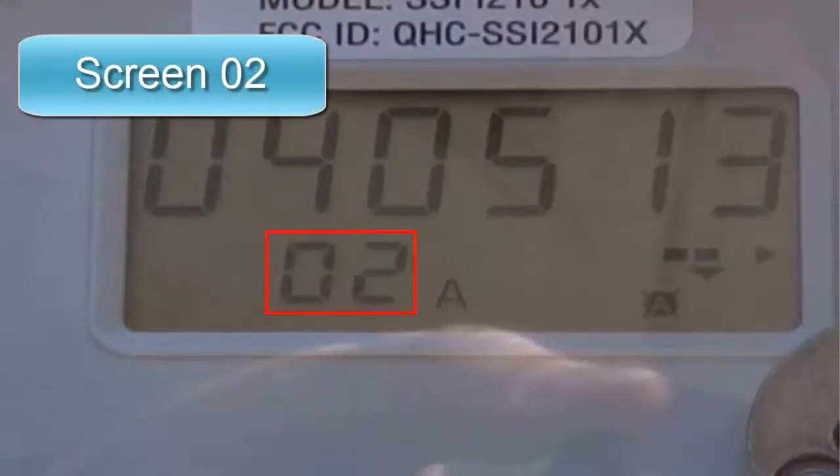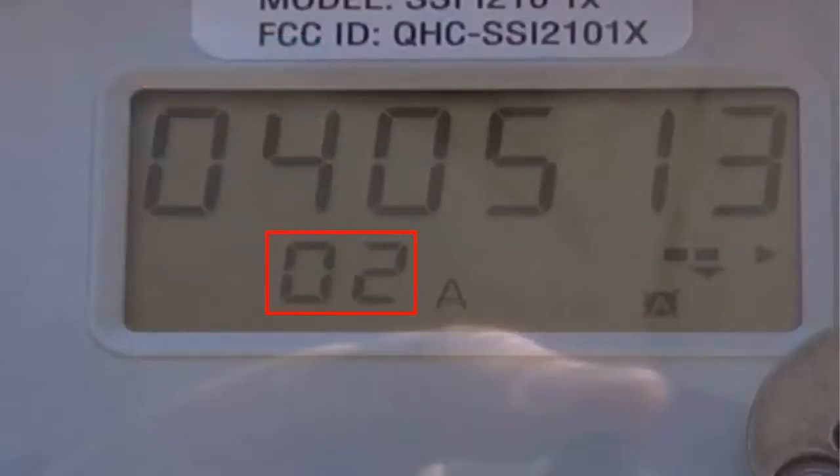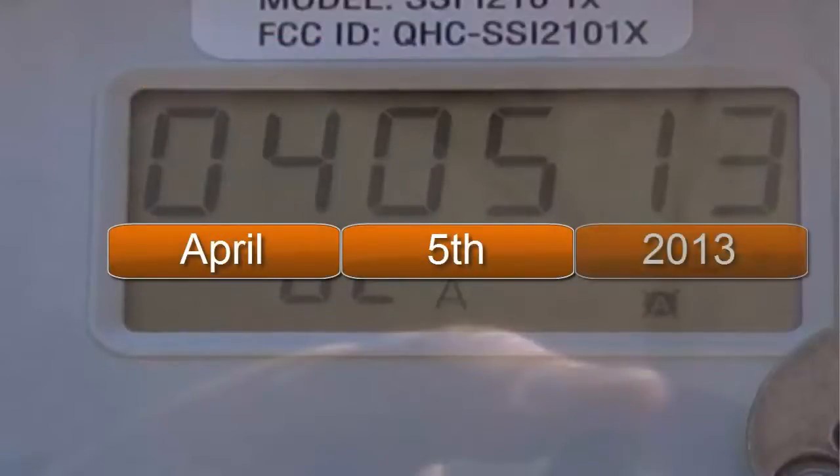Screen 02 displays the current date. You can see it broken down here with month, day, and then year.